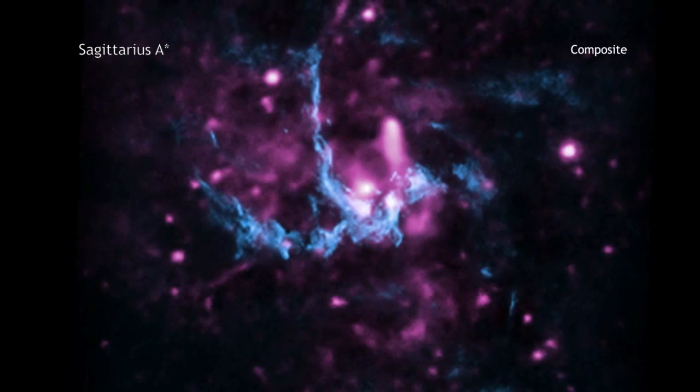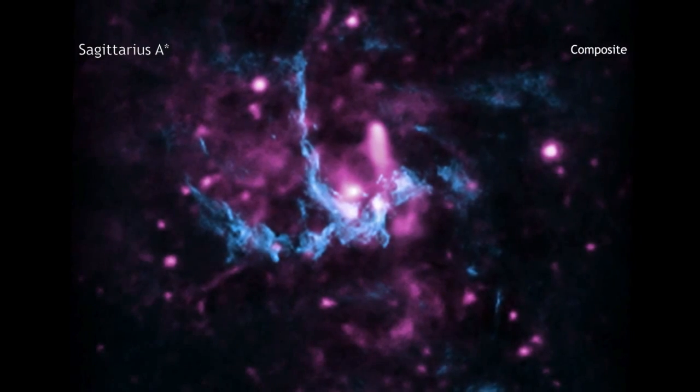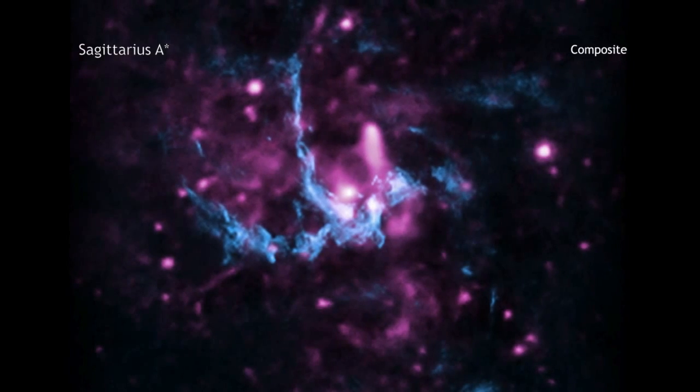The likely discovery of a jet from Sag A star helps astronomers learn more about the giant black hole, including how it is spinning.